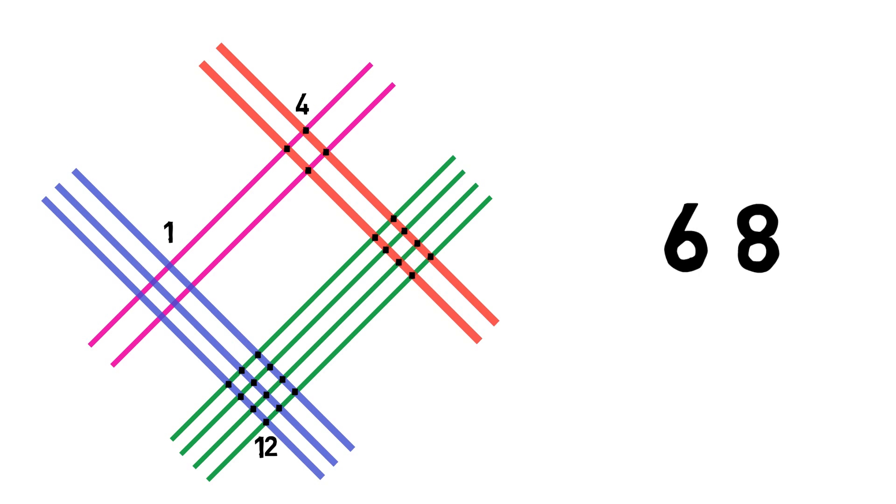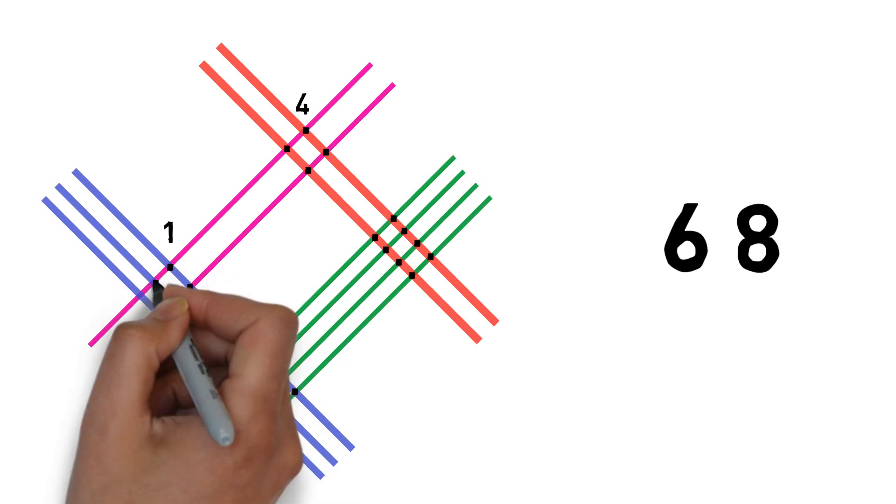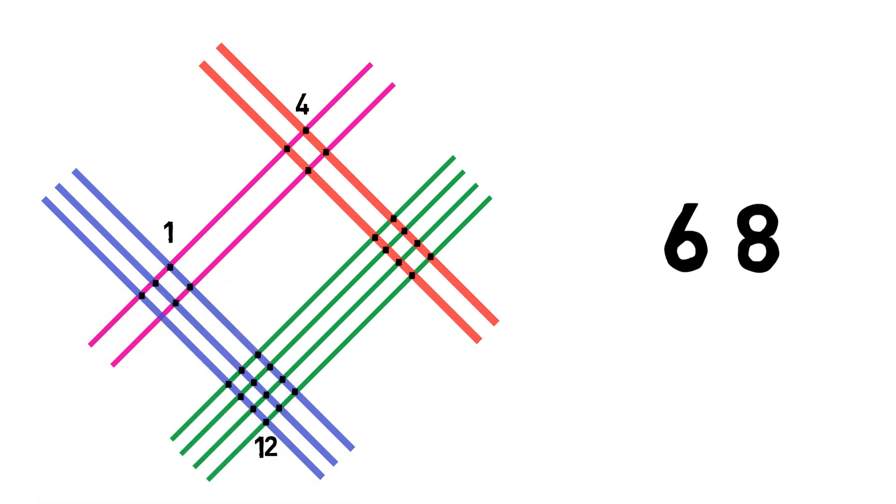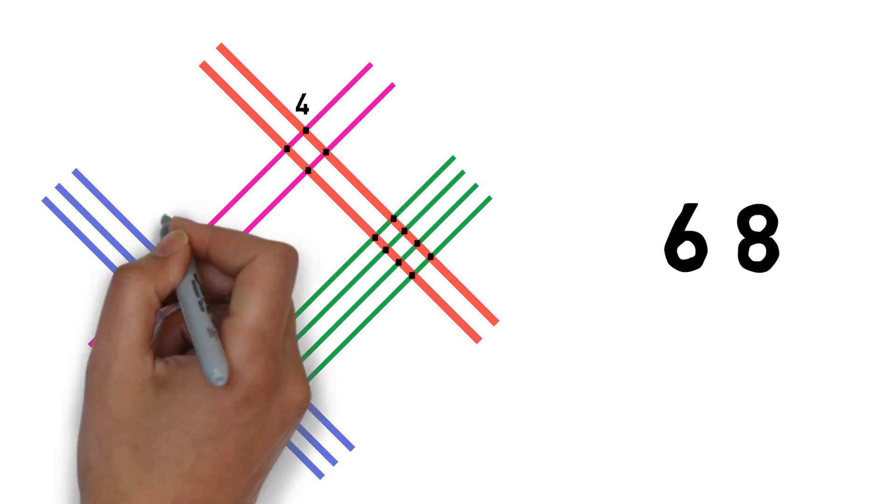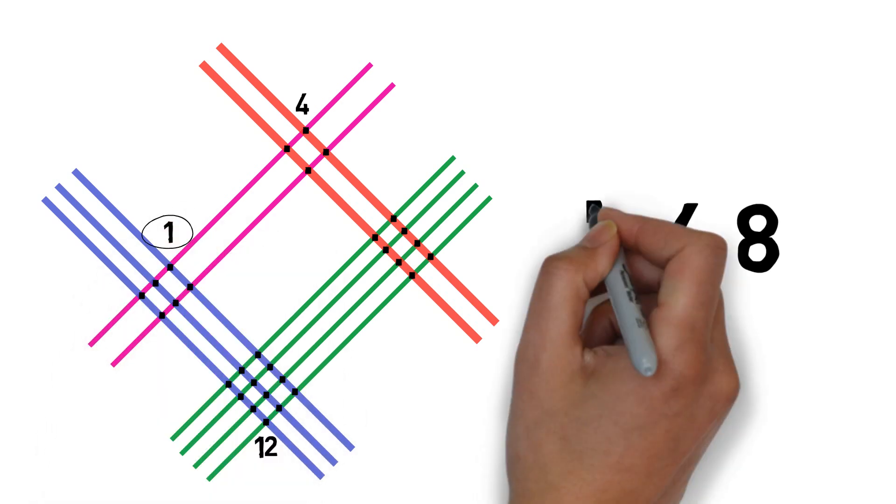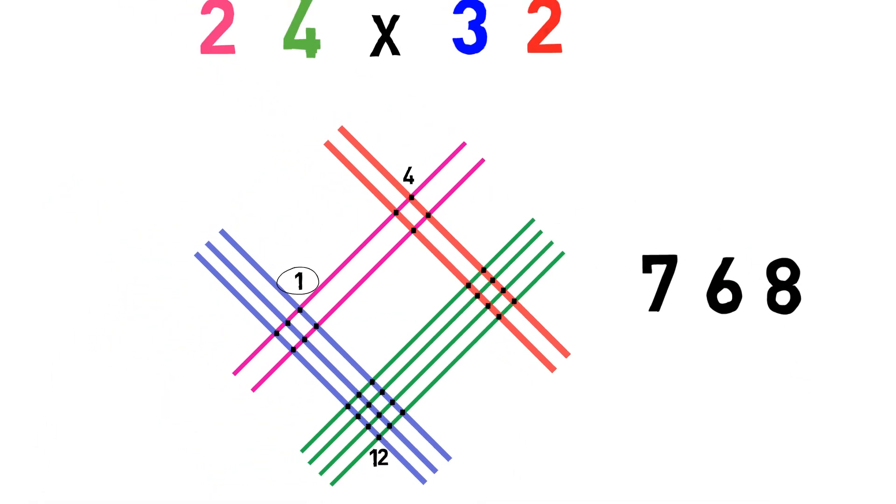Let me write one here and then I'll calculate the hundreds digit. So it's going to be one, two, three, four, five, six plus one carry. So seven. The final answer is 768.